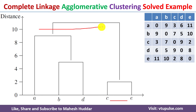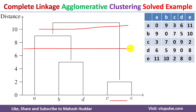Once the dendrogram is drawn, based on the required number of clusters we cut it. If you cut it at a high level you get two clusters: one containing ABD and another containing CE. If you cut it lower, you get three clusters: one containing A, another containing BD, and the third containing CE. The same approach can be applied for any required number of clusters.